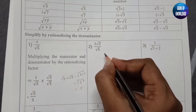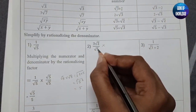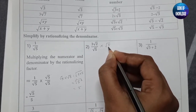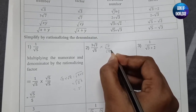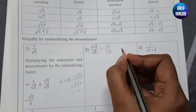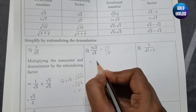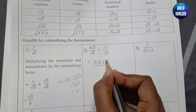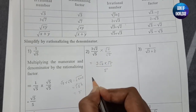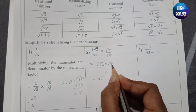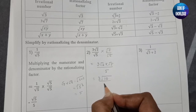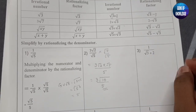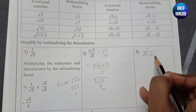For the next one, we multiply the numerator and denominator by the same term given in the denominator. We get 3×√2×√5 in the numerator, and √5×√5 = 5 in the denominator. Inside the root, 2×5 = 10, so the answer is 3√10 divided by 5.